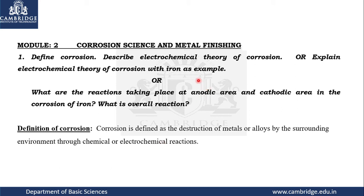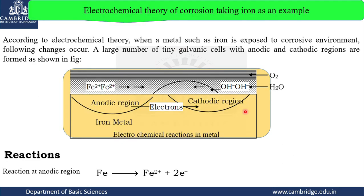Now we will see, by taking iron as an example, how to explain the electrochemical theory. Consider an iron metal kept in a suitable corrosive medium. When a metal is placed in such a medium, it can form many tiny galvanic cells. Once the galvanic cell is formed, it indicates that anode and cathode reactions are going to take place, so an anode region and a cathode region will be formed within a single metallic structure.